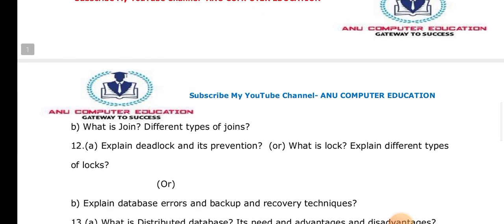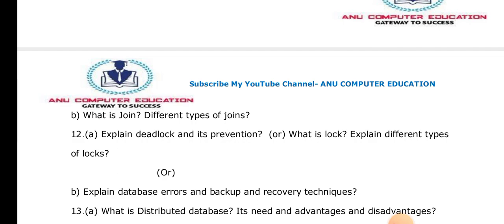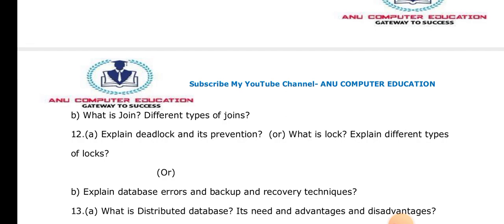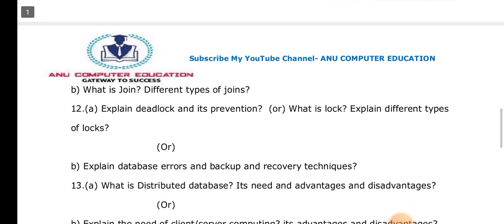What are database errors and backup and recovery techniques? Errors can occur due to hardware crashes, power failures, floods, or other uncertainties. Every company should maintain a backup so that when data is lost, recovery is possible. What is a distributed database? Organizations distribute the same data across different areas so that if one site fails, the data can be accessed from another site.